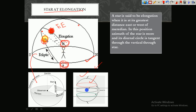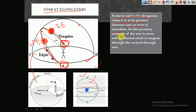If the position of the star is at the greatest distance from the west, then it is called western elongation. This line is the meridian — the star will be at the meridian. So the definition is: a star is said to be at elongation when it is at the greatest distance either from east or west of the meridian.